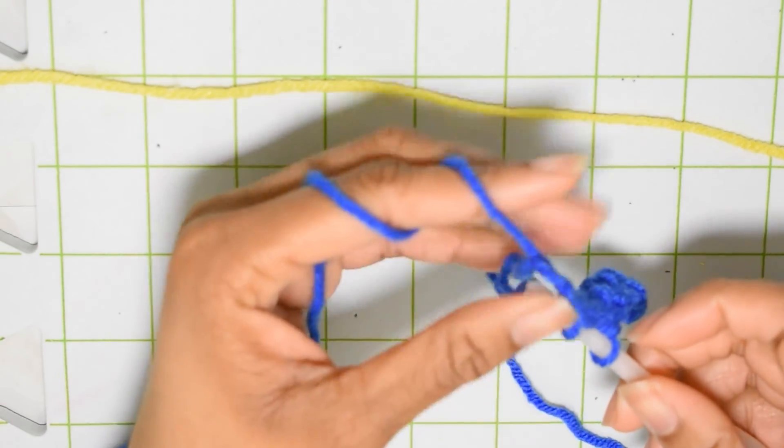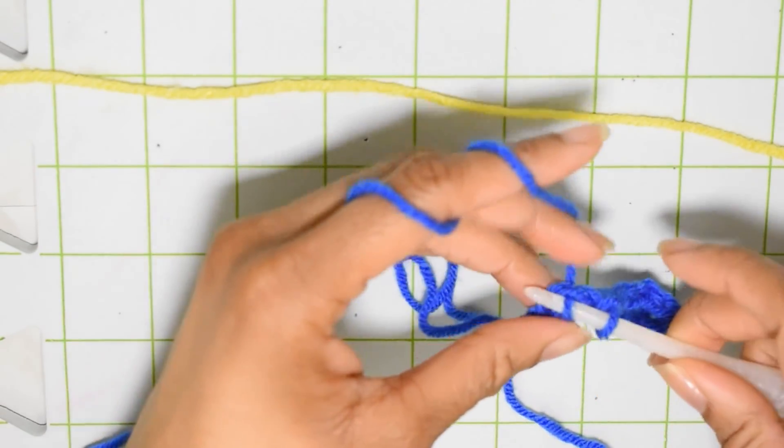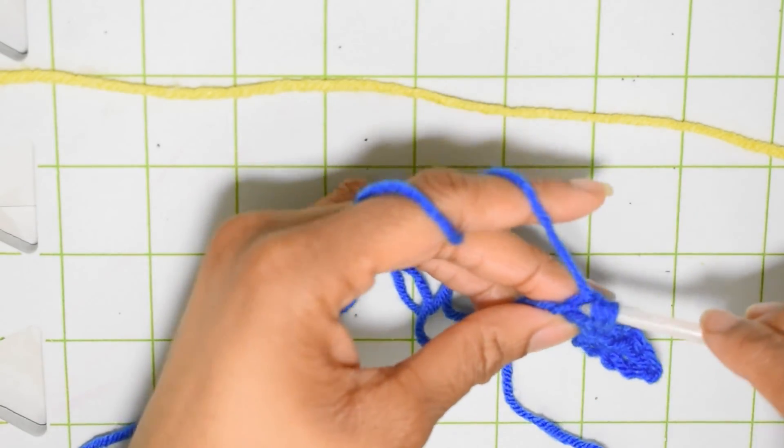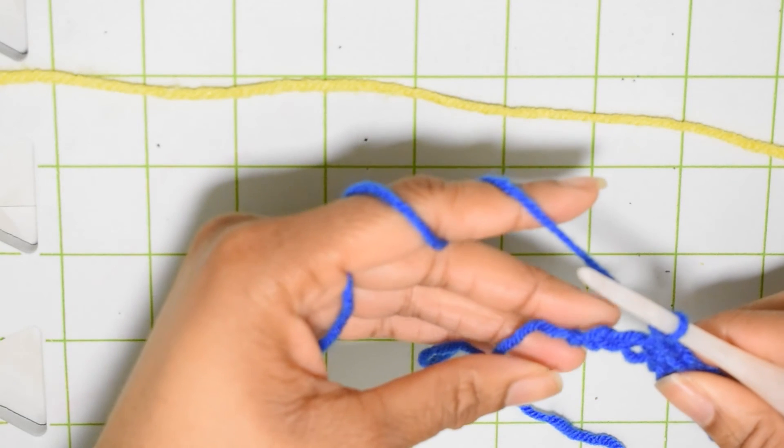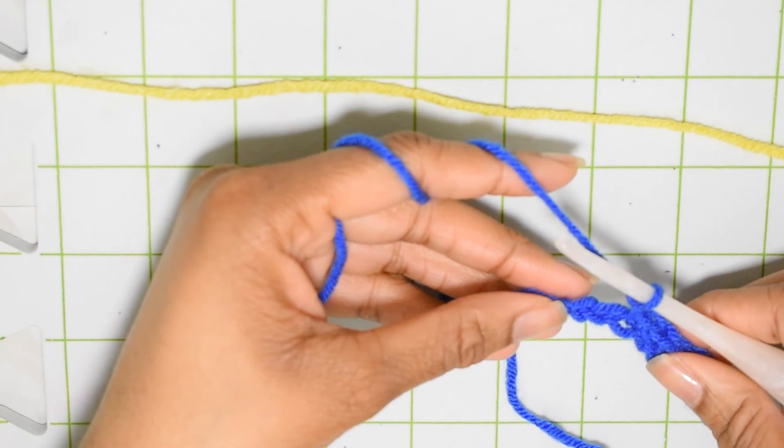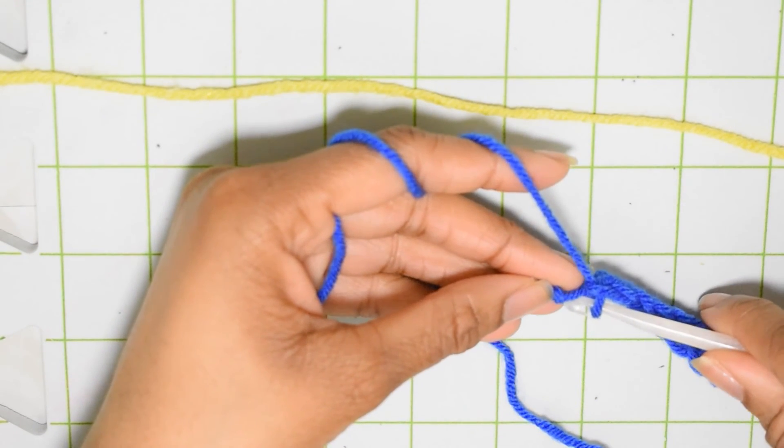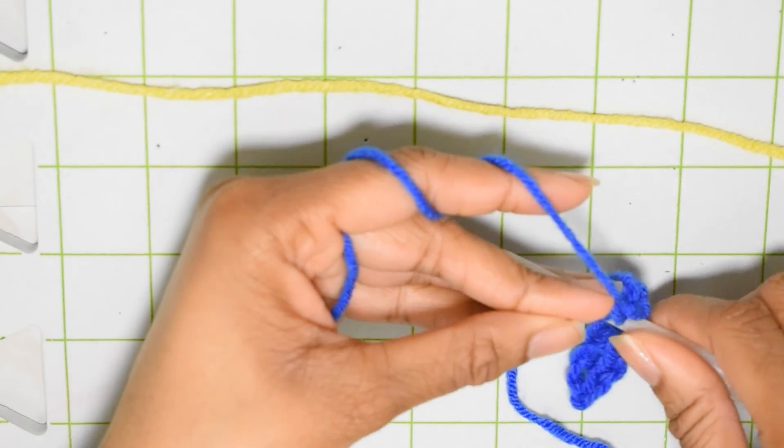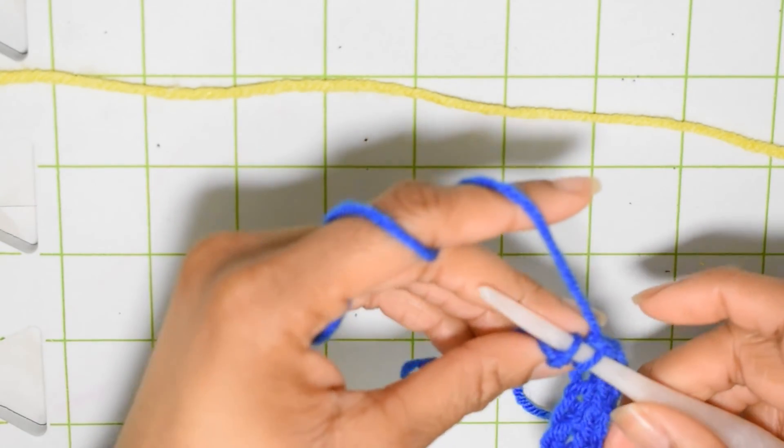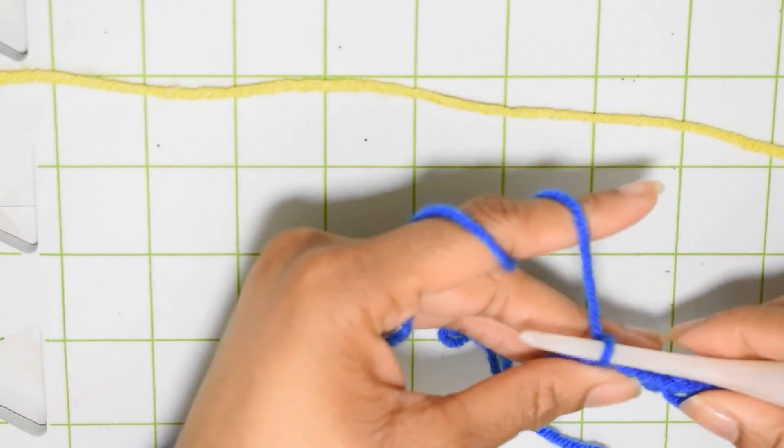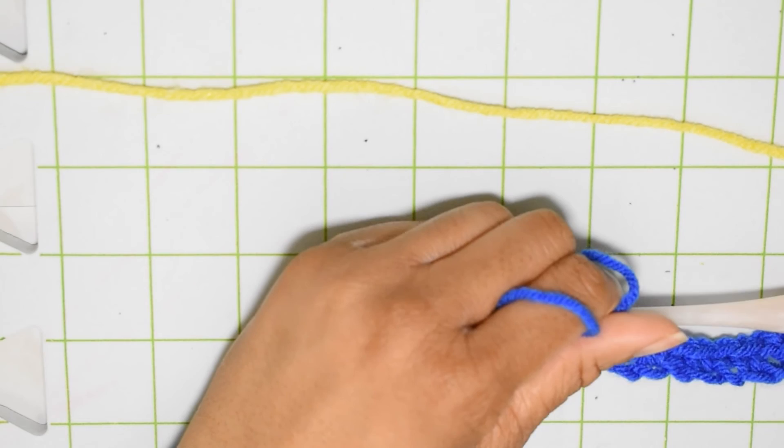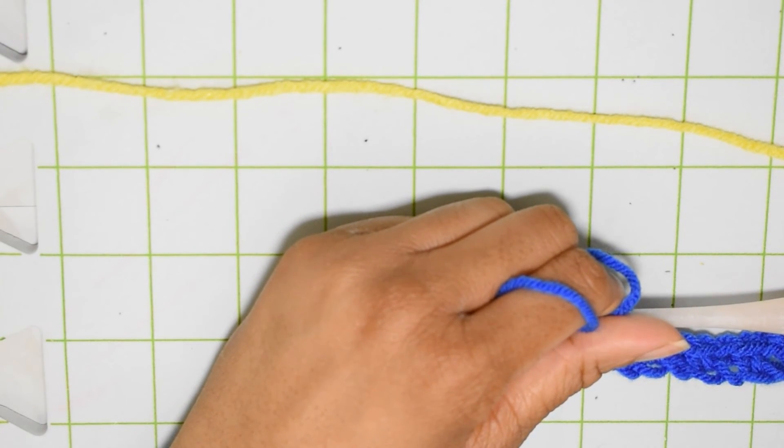If you're doing a longer project, feel free to pause the video and catch up to me when you are ready to move on to row two. I'm now at my last two chains, so I skipped the one and I'm single crocheting into the very last one. All right, super easy right? So now on to row two.